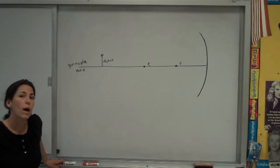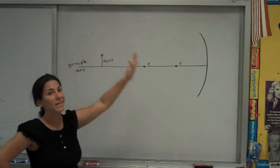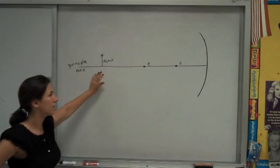I'm going to practice with you how to find the location of an image from a concave mirror. So this is representing a concave mirror. This is the principal axis.